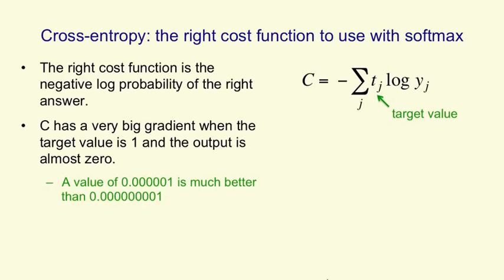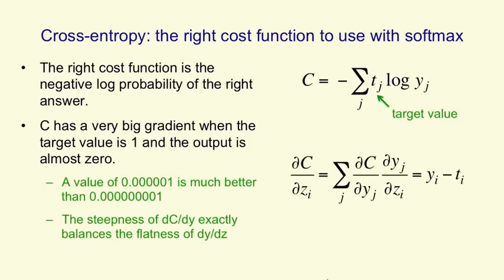So we get a nice property that that cost function, C, has a very steep derivative when the answer is very wrong. And that exactly balances the fact that the way in which the output changes as you change the input, dy by dz, is very flat when the answer is very wrong.